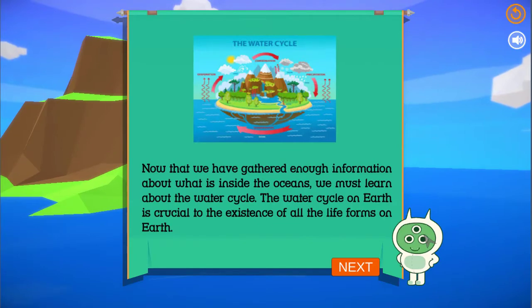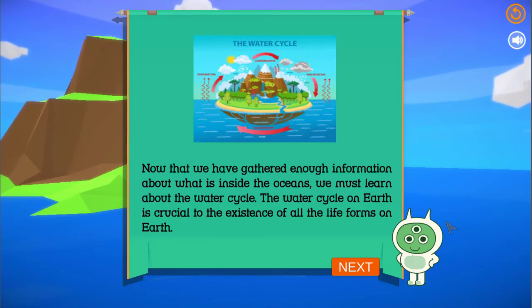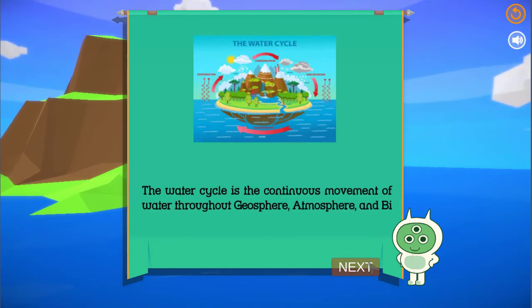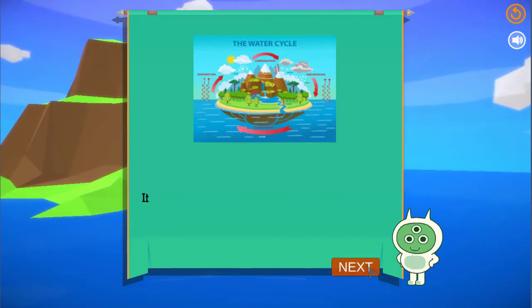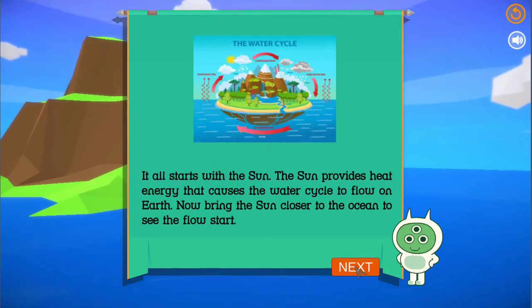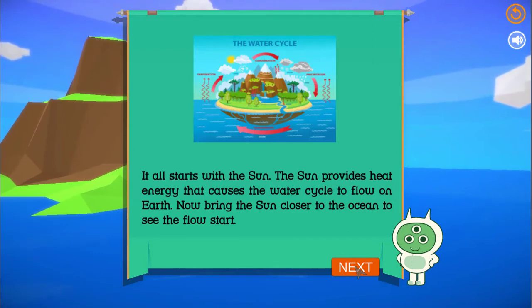Say hello to the water molecule again. The oceans are made of water. Now that we have gathered enough information about what is inside the oceans, we must learn about the water cycle. The water cycle on Earth is crucial to the existence of all the life forms on Earth. It all starts with the sun. The sun provides heat energy that causes the water cycle to flow on Earth. Now bring the sun closer to the ocean to see the flow start.